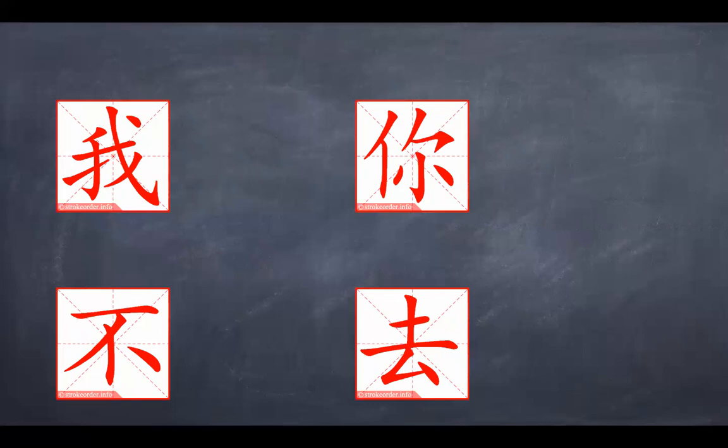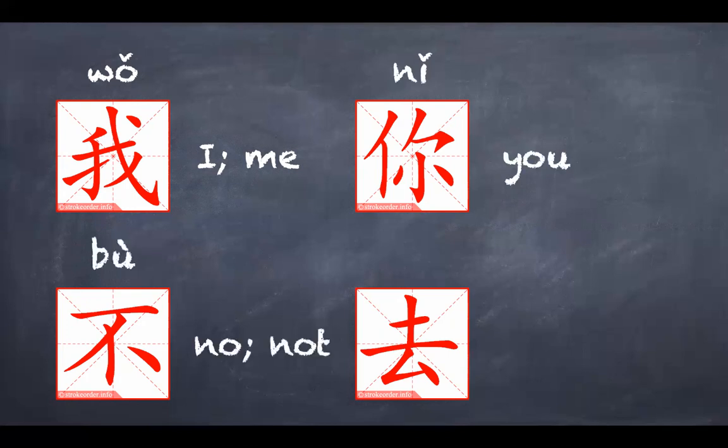Let's review them. First one, 我, 我, 你, 你, 不, 不, 不.